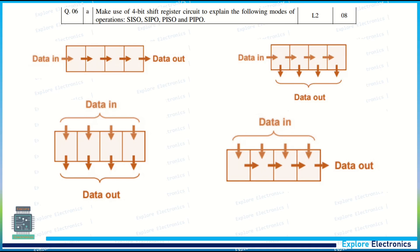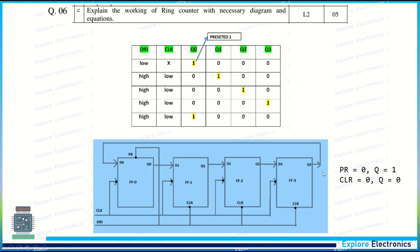Make use of a 4-bit shift register to explain SISO, SIPO, PISO, and PIPO modes. In SISO (Serial In Serial Out), input is given serially and comes out in the same order. In SIPO (Serial In Parallel Out), after four clock cycles all data in the register can be read out in parallel. In PIPO (Parallel In Parallel Out), data is stored in one cycle and read out in the next. In PISO (Parallel In Serial Out), data is loaded in parallel and taken out serially after four clock cycles.